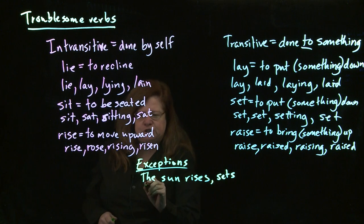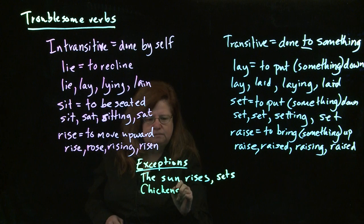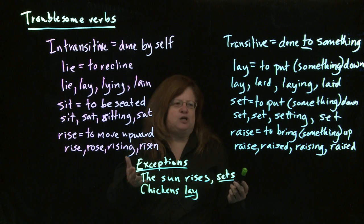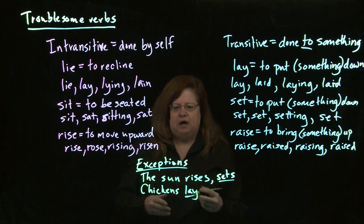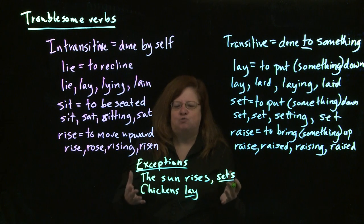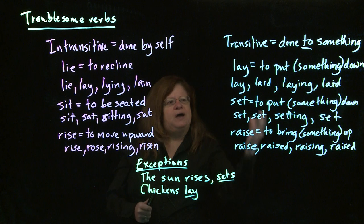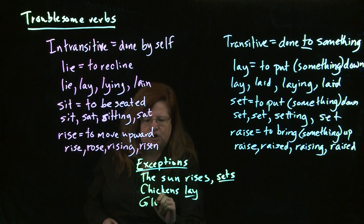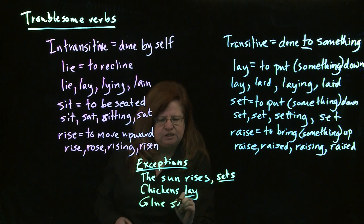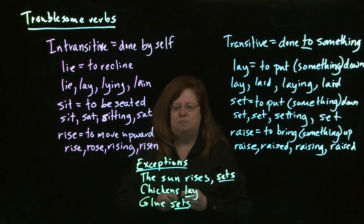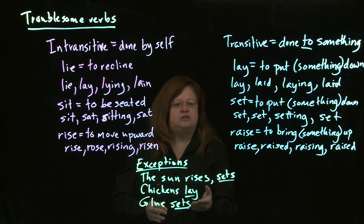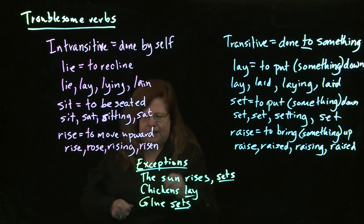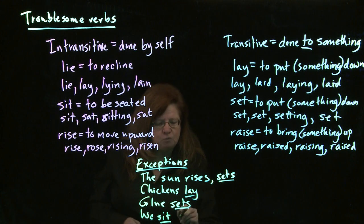Another exception is chickens lay — there's actually an implied egg in the equation. When we say the chickens are laying well, it means they're laying eggs well, but we use that without a direct object in the sentence. We also have glue or other hardening things — concrete, whatever — that sets, meaning it hardens up. Again, this is intransitive where usually set is transitive. And the final exception is that we sit small children — where normally sit is intransitive, when talking about what we're doing with small children, it becomes transitive.